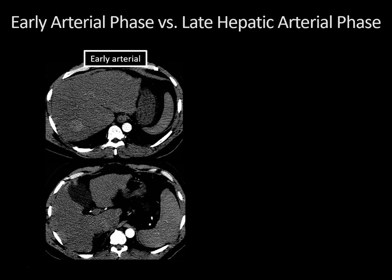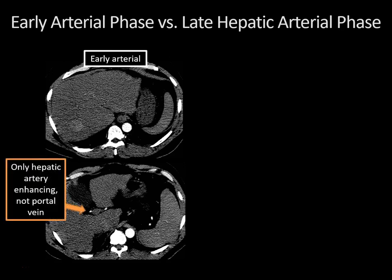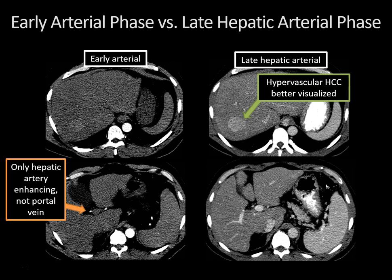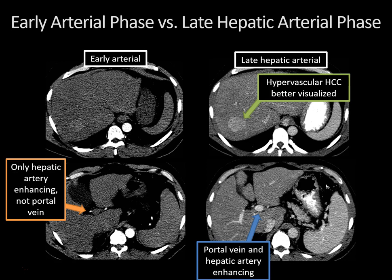Here's an example of why the difference between early arterial and late hepatic arterial phase is so crucial. The two left-hand images show an early arterial phase study — the aorta is markedly enhancing, and so is the hepatic artery, but there's nothing in the portal vein. You might initially think this is the best phase to pick up hypervascular liver lesions, but a scan done a few months later on the same patient shows this hypervascular hepatocellular carcinoma much more clearly because the portal vein is now nicely enhancing alongside the hepatic artery — a true late hepatic arterial phase.